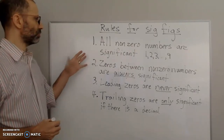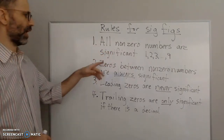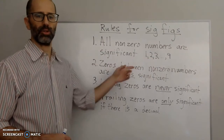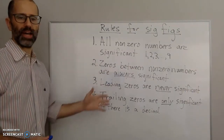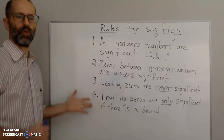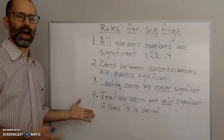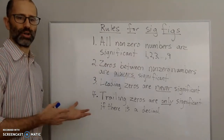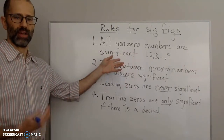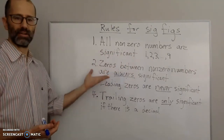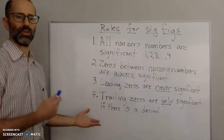So rule number one: all non-zero numbers are significant. If you have any number between 1 and 9, including 1 and 9, those are going to be significant. The rules really don't apply to non-zero numbers — the rules are mainly for the zeros. How do you determine whether a zero is significant or not? Non-zero numbers are always significant, so there's never a question. It's the zeros that cause some trouble.